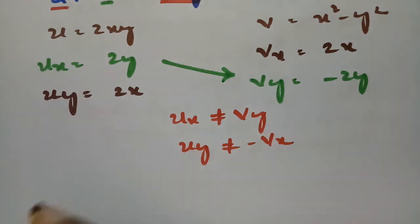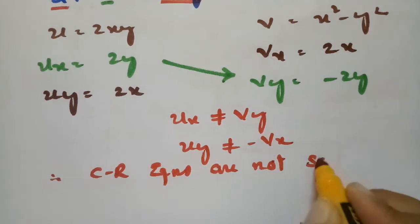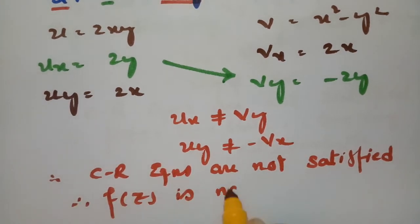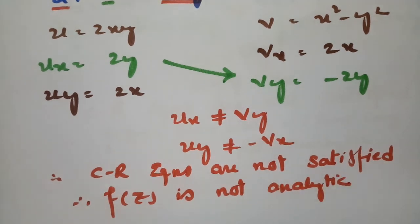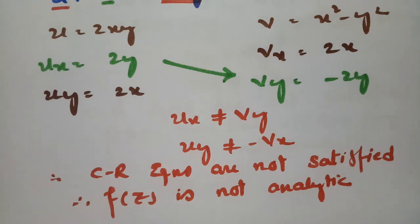Therefore, CR equations are not satisfied, and the function f(z) is not analytic. These are a few functions where f(z) is not analytic. To summarize: we check the CR equations — if they are satisfied, the function is analytic; if not, f(z) is not analytic. Thank you for watching. I hope you got an idea of how to check whether a function is analytic or not.